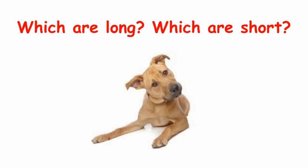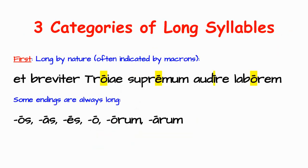The trick is determining which syllables are long and which are short. There are three categories of syllables that are long, and once you figure out which syllables are long, then everything else is short. Every syllable is based on one vowel sound, so we're going to be looking at the vowels to figure out the syllables.